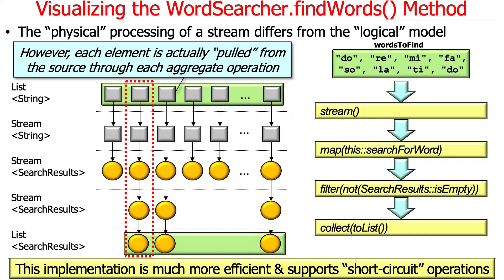The goal of this pull-based model is to be more efficient and to support so-called short-circuit operations. There are certain operations in streams that are short-circuit operations. A good example is limit — there's a limit operation that says stop processing after you've hit the tenth element, regardless of how many elements are in the stream. In that case, you want the stream to efficiently stop the moment the limit is reached. If you processed layer by layer from left to right, you'd potentially do a lot more work before noticing you were finished. So the physical processing model involves pulling data from the data source through all the processing operations, which enables short-circuit efficiency.